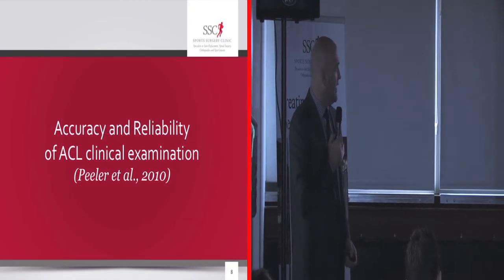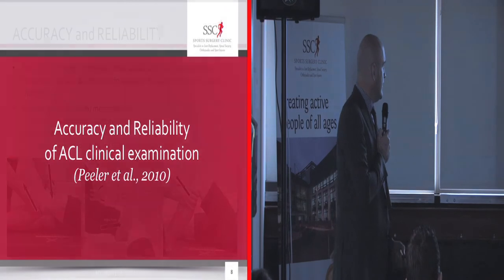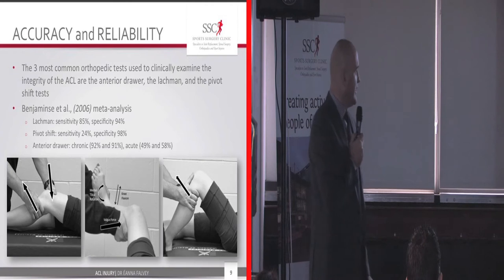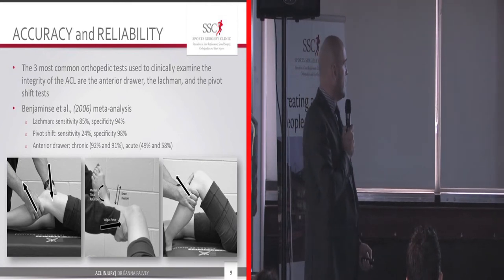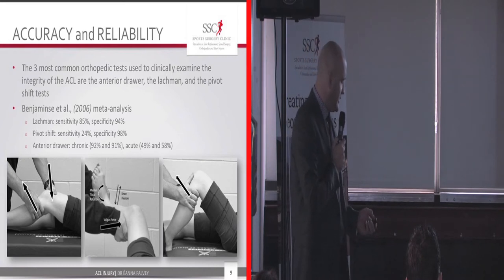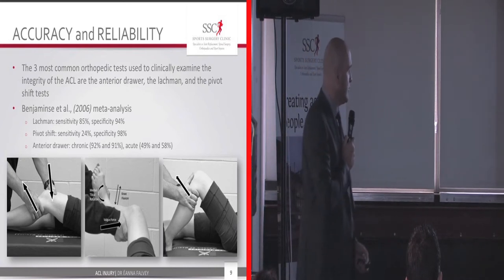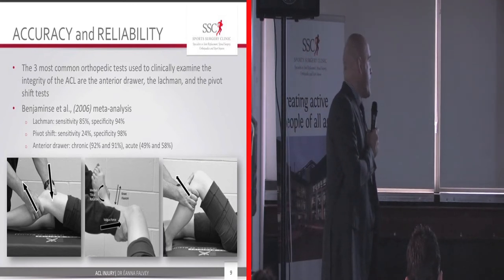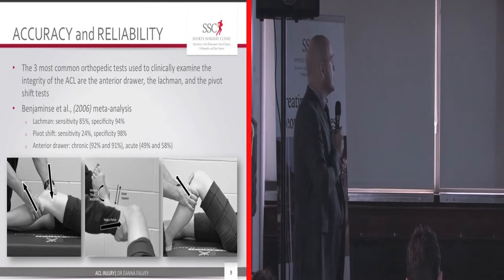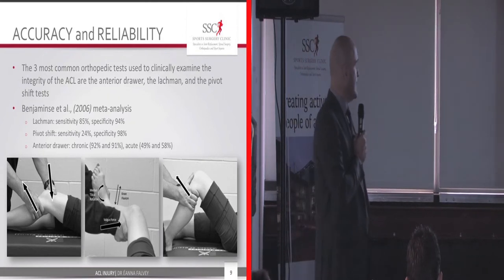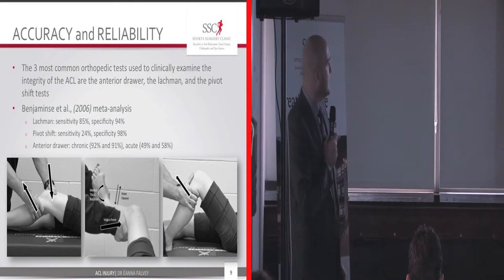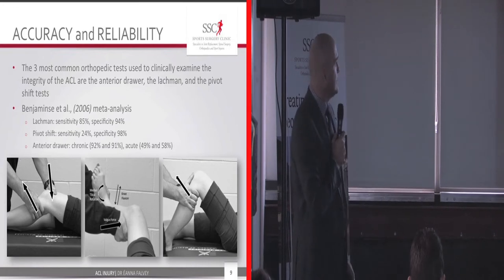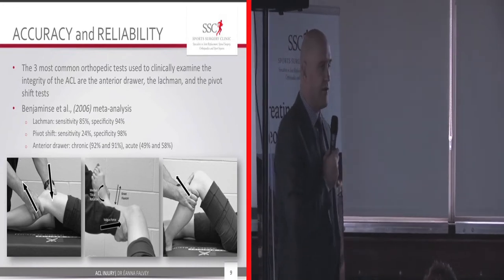Looking at clinical examination: the three standard tests are the anterior draw, the pivot shift, and Lachman's test. In the anterior draw we look at AP laxity, whereas in the pivot shift we look at rotational laxity. A meta-analysis in 2006 found that the Lachman test was sensitive and specific, whereas the pivot shift, while extremely specific, wasn't very sensitive, and the anterior draw was excellent in chronic situations but not very good in acute situations.